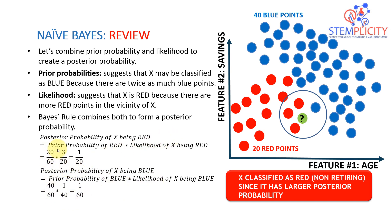We also computed the prior probability of red and blue: 40 blue points divided by 60 total for blue, and 20 points divided by 60 for red. Multiplying them together gives us what we call the posterior probability. In this case, red was greater than blue, so this point is classified as red — meaning this customer should not be retiring anytime soon. X is classified as red or non-retiring since it has a larger posterior probability compared to the blue class.